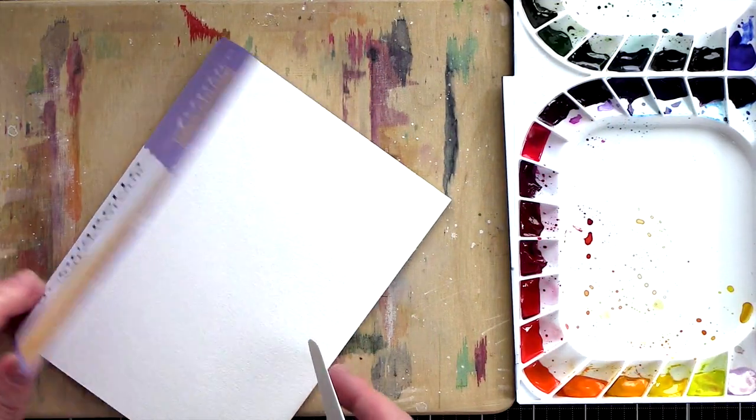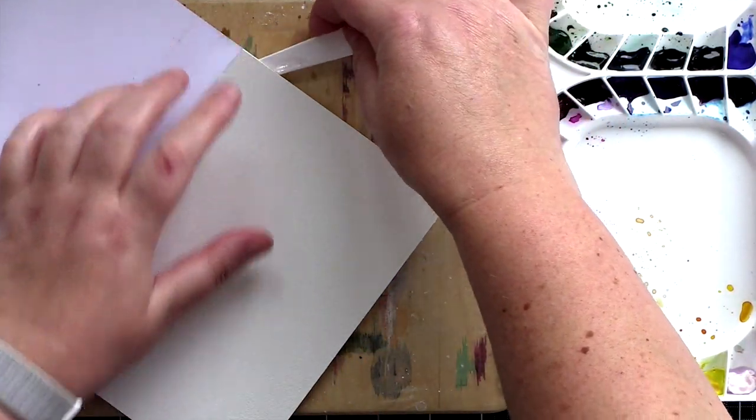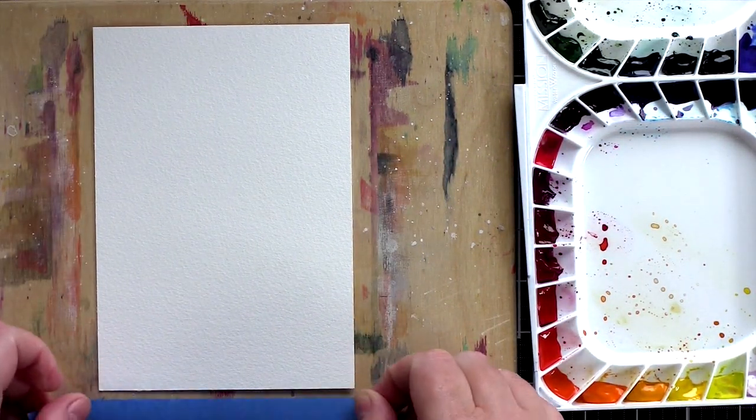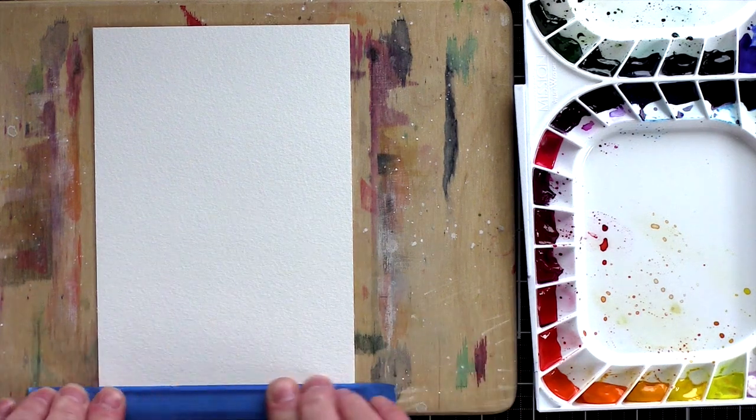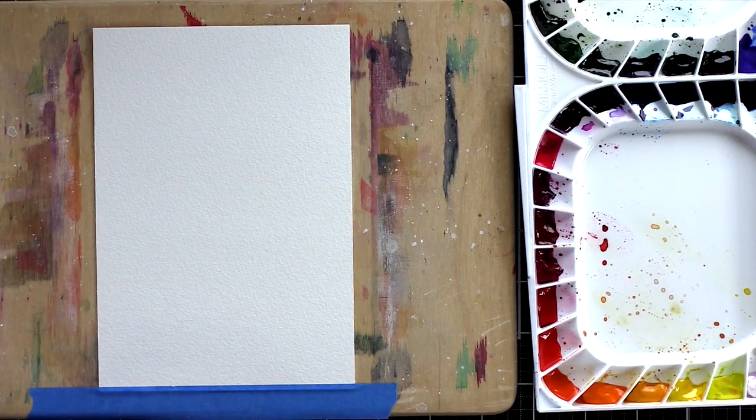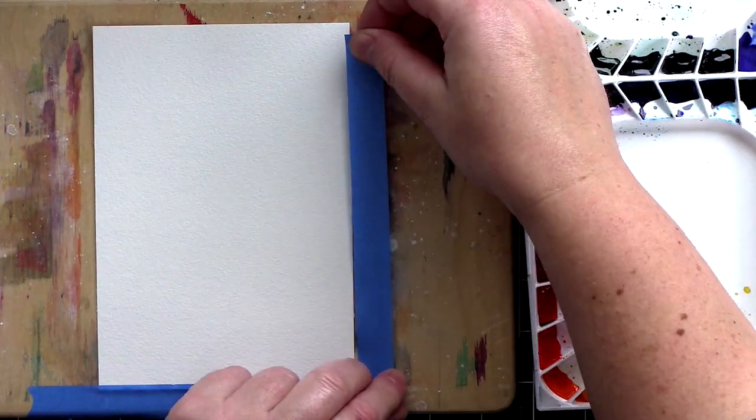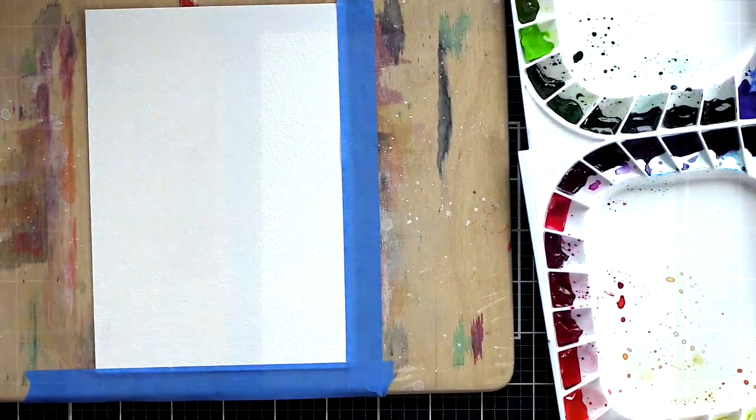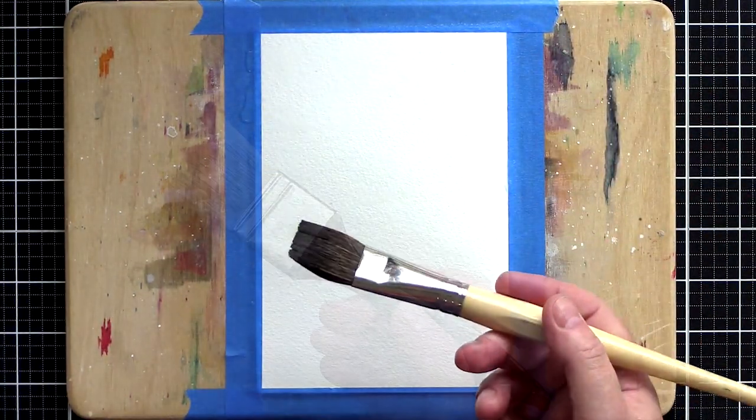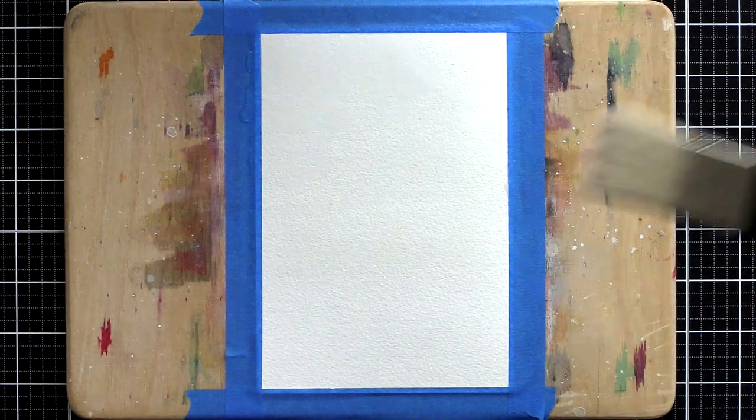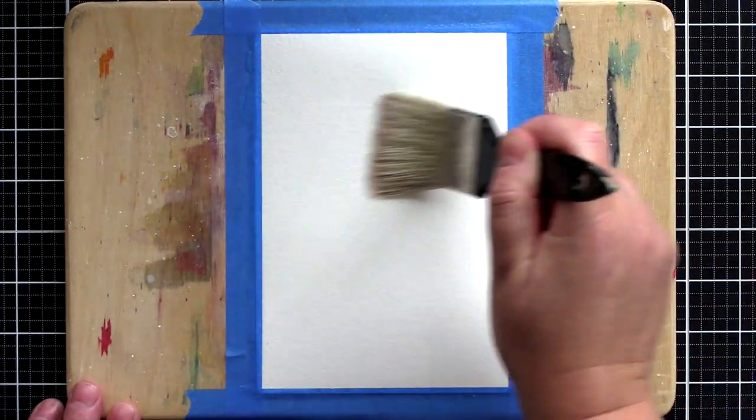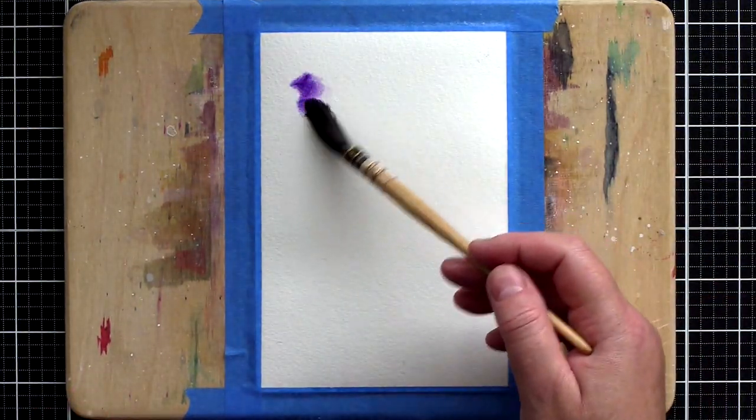I'm using Fabriano Artistico Extra White Cold Press Watercolour Card which comes in a 5x7 gummed block. I've removed a piece from the block with a palette knife and taped it to a board with painter's tape. I'm going to be using a lot of water at first and taping the piece down will help prevent it warping. I'm using a broad brush to liberally apply clean clear water over the card. Use whatever you have to hand - a paintbrush will work just as well.